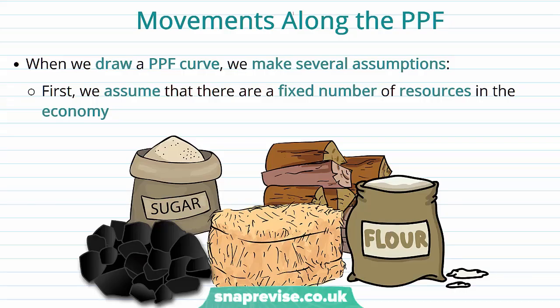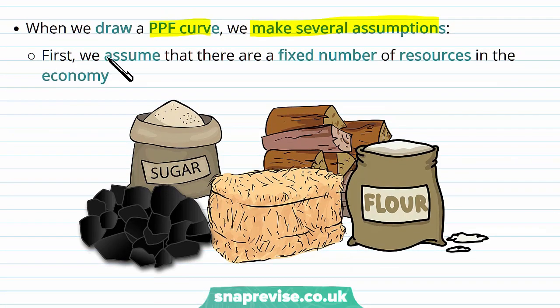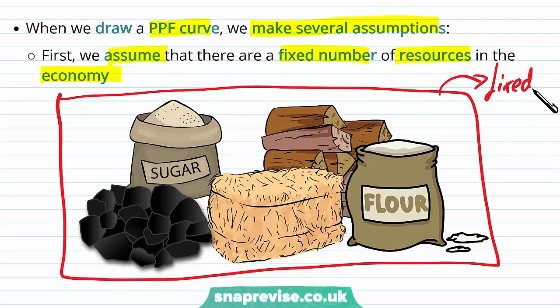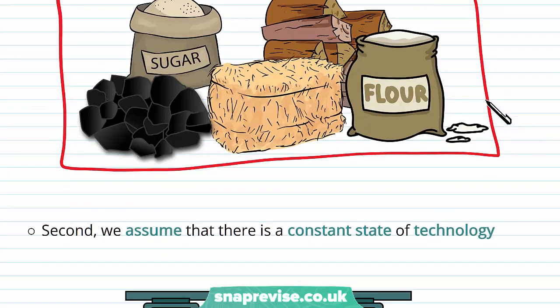When drawing our PPF curve we've made several assumptions. The first assumption is that we assume there are a fixed number of resources within our economy. So what we mean by fixed number of resources is that we have a selection of resources and that is it — there are no more resources than what is present, and there is no external variable which is going to change that.